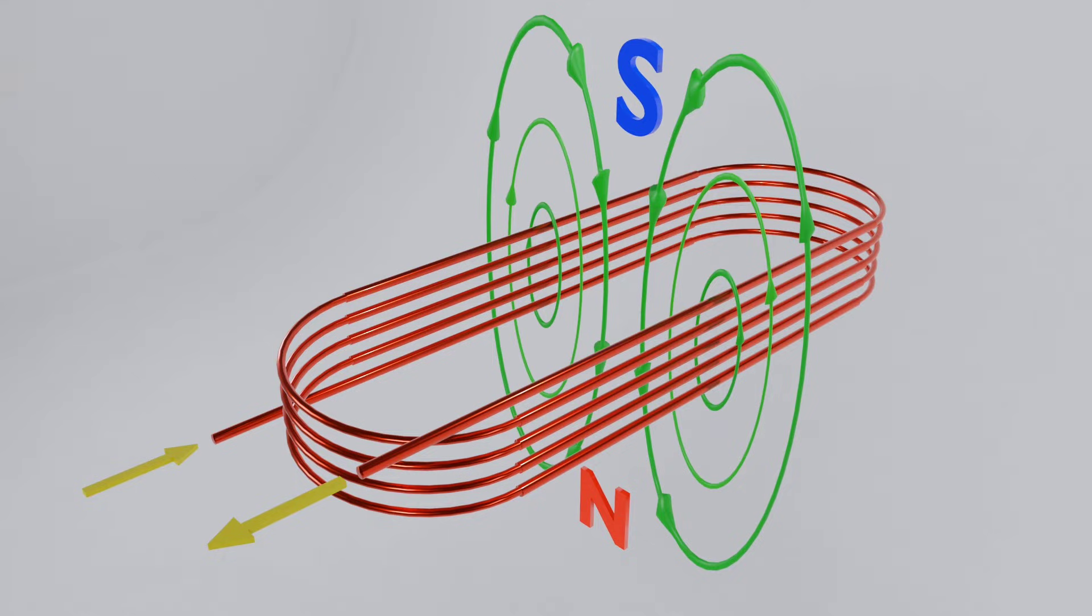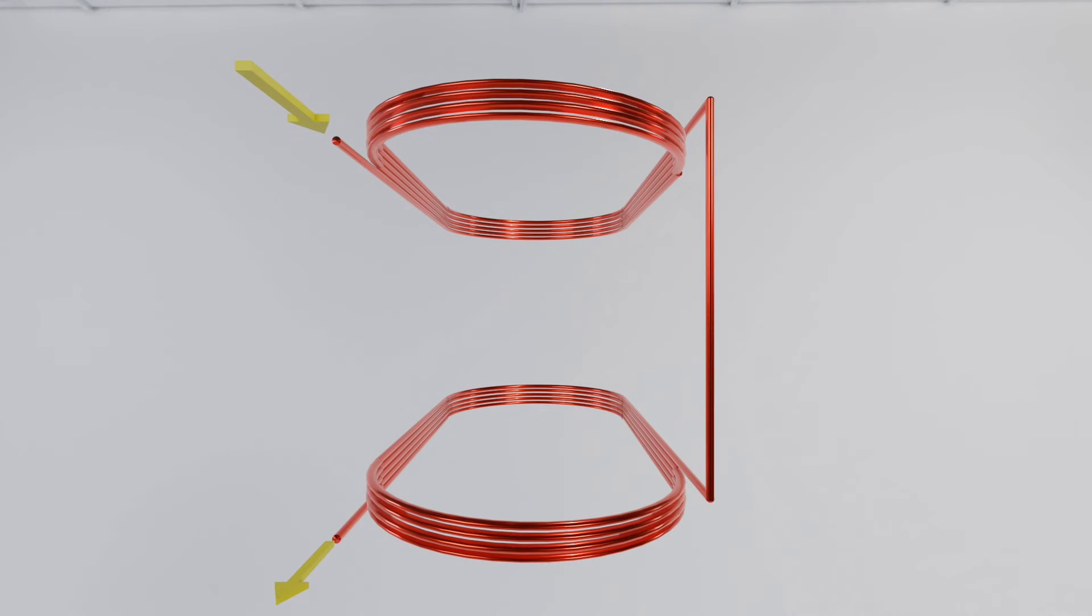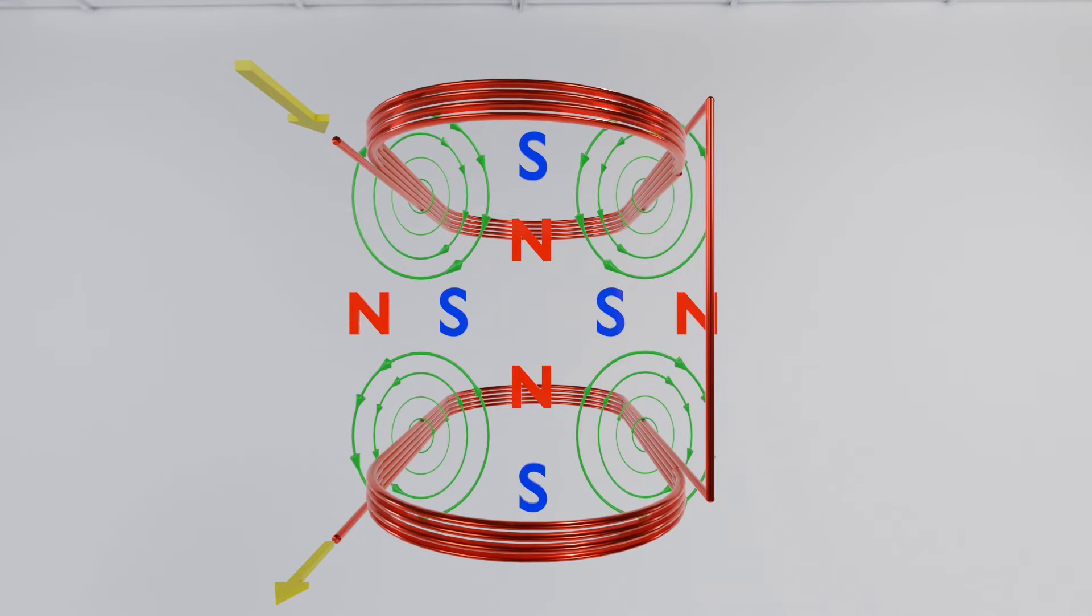But in electrical motors, we use four-pole, six-pole, and other pole magnetic fields, as required. To produce a four-pole magnetic field, we use one more winding in series. There is a four-pole magnetic field as shown.